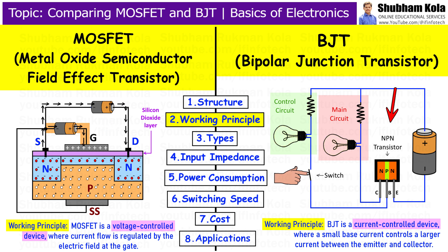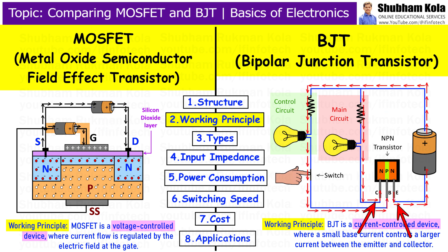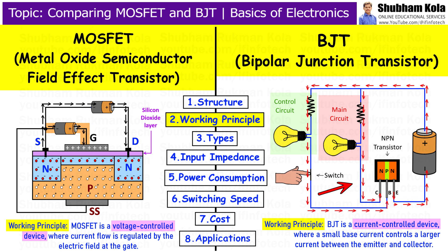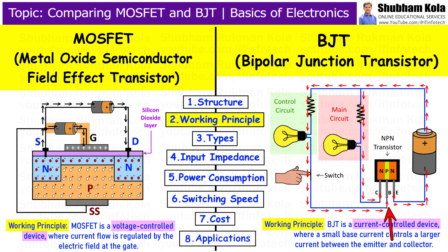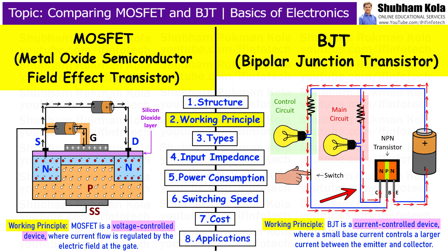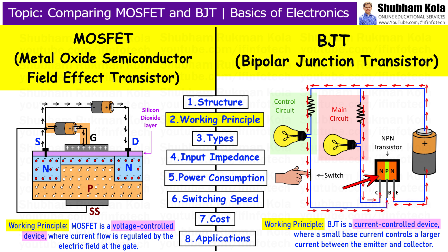In BJT, the current flows from the collector to the emitter through the base, and the amount of current is controlled by the current at the base. When a small current flows into the base, it allows a much larger current to flow. The current at the base acts as a trigger for a larger current flow, making BJTs current-driven devices.